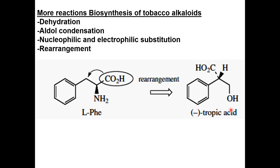Some more reactions involved in the biosynthesis of alkaloids include dehydration, aldol condensation, nucleophilic and electrophilic substitution, and rearrangement. One unique reaction is rearrangement — for example, in the rearrangement of L-phenylalanine into minus-tropic acid, in which case the carboxylic acid group of phenylalanine undergoes a 2-pro-S-proton shift and we get tropic acid.